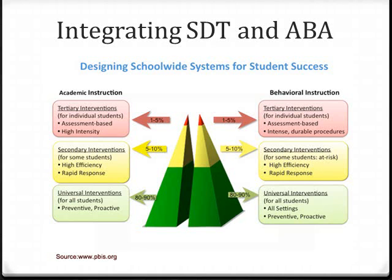I'm using the RTI triangle to envision the two approaches here. I see SDT as focusing on the majority of students, who we refer to as Tier 1 students in both academics and behavior — about 50% to 90% of the student body. ABA becomes particularly useful for the Tier 2 and Tier 3 students, who make up about 15% of the student body. These students need a more targeted and data-driven approach to behavior management than SDT provides, possibly due to having a disability or a variety of other risk factors.